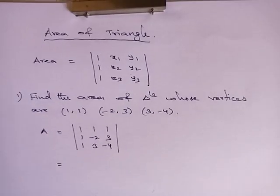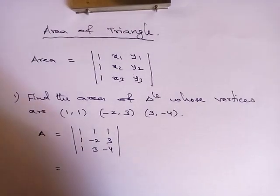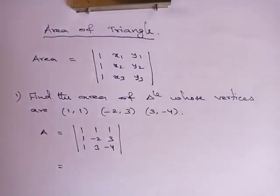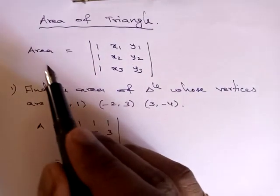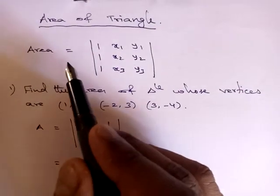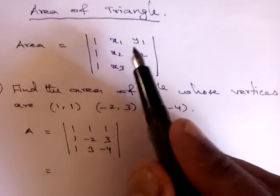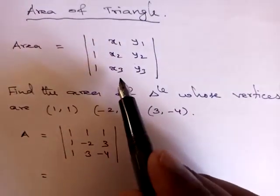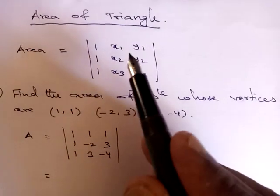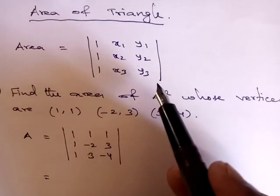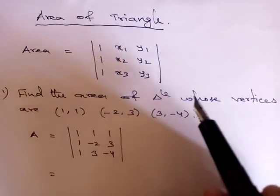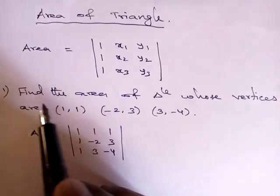This is 12th standard determinants. By using this determinant we can find the area of the triangle. The area of the triangle can be found by using this formula: determinant with 1 1 1, x1 y1, x2 y2, x3 y3, where x1 y1, x2 y2, x3 y3 are the three vertices of the triangle. Now we will see one problem.